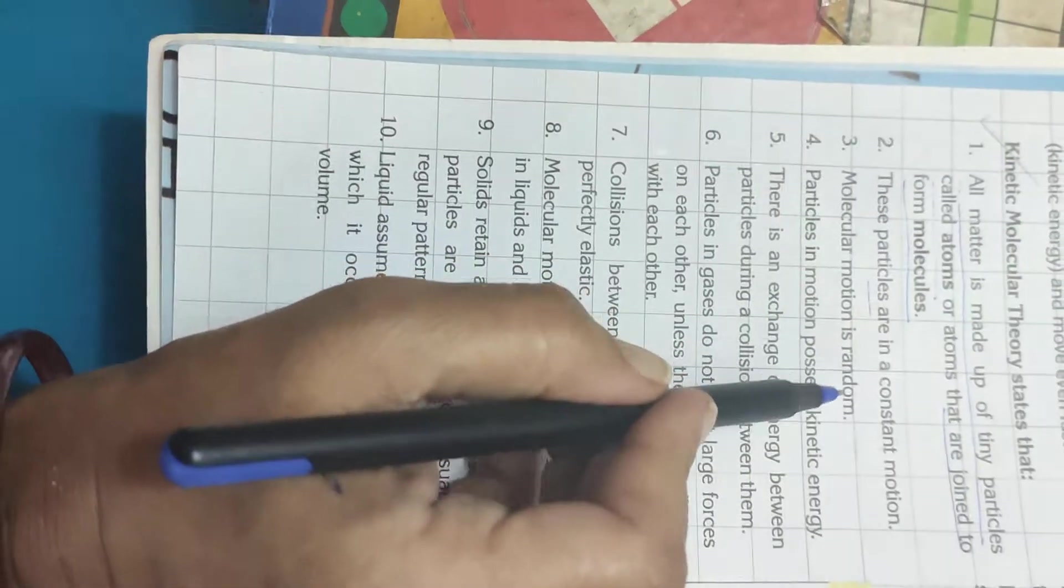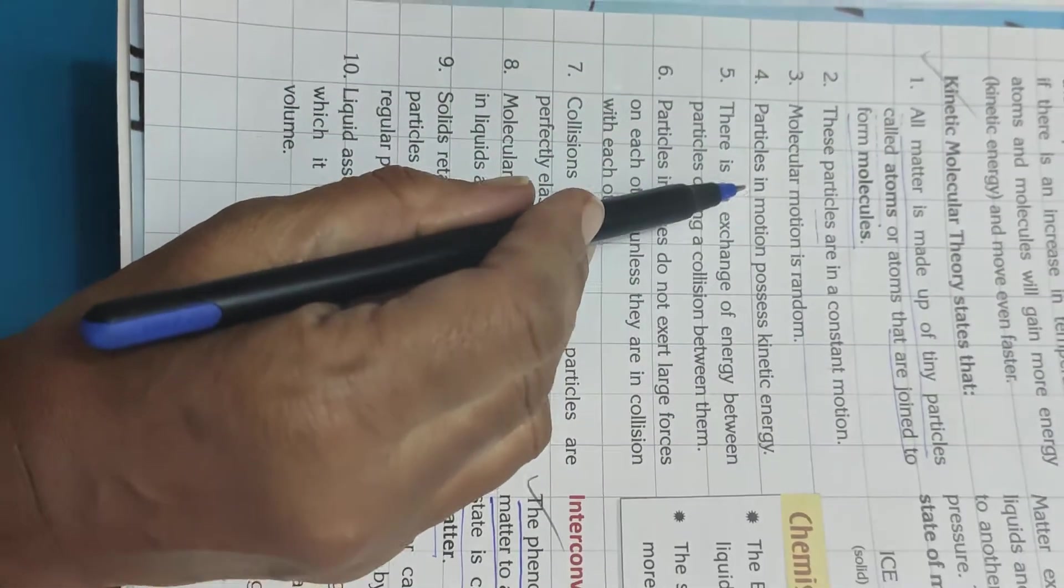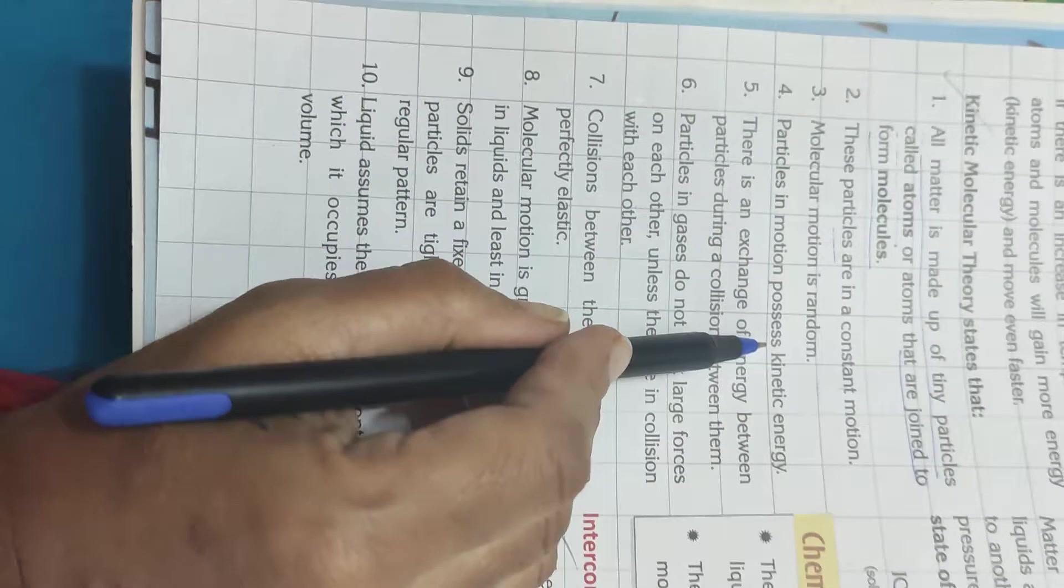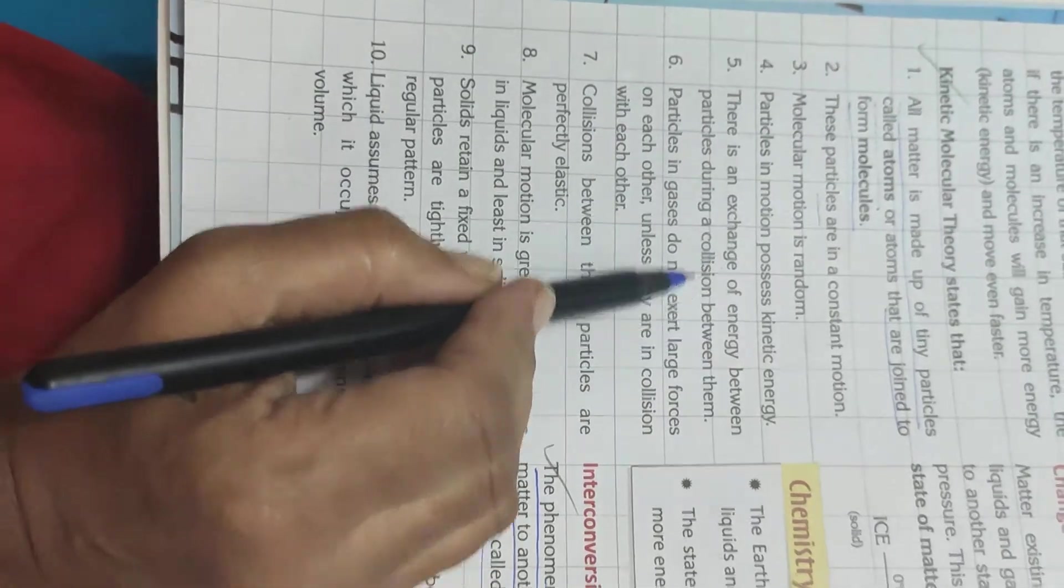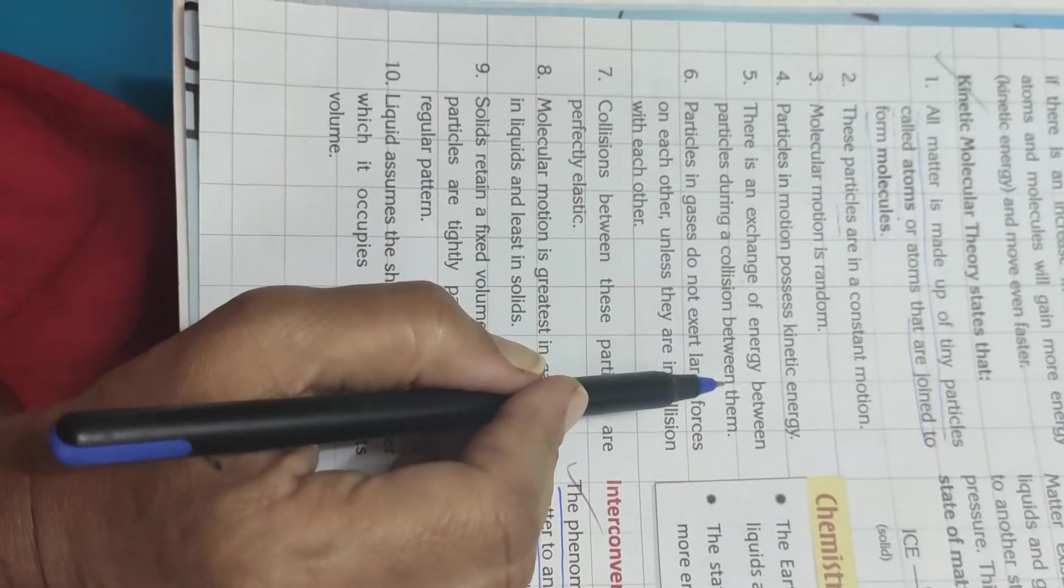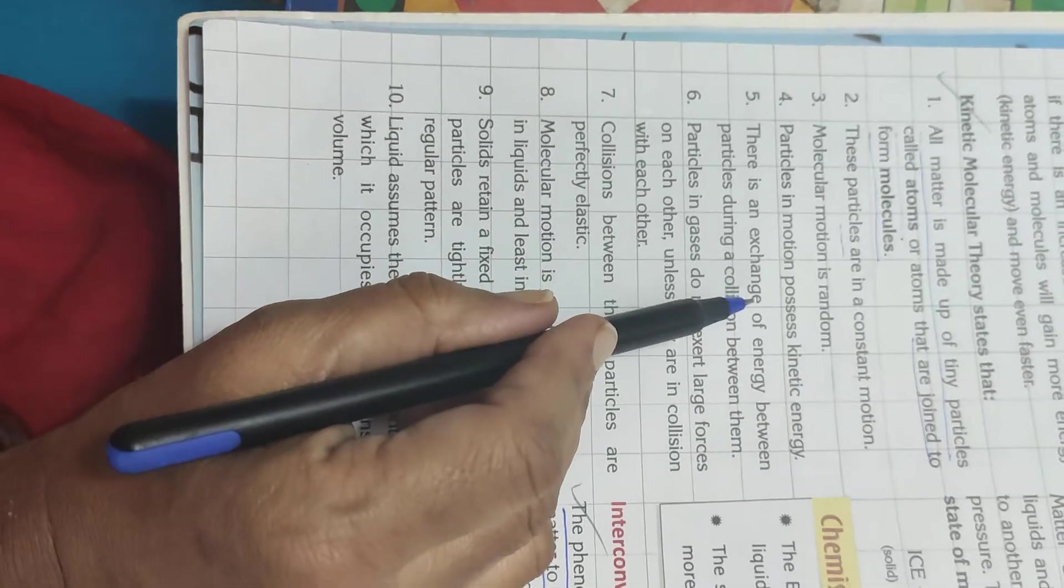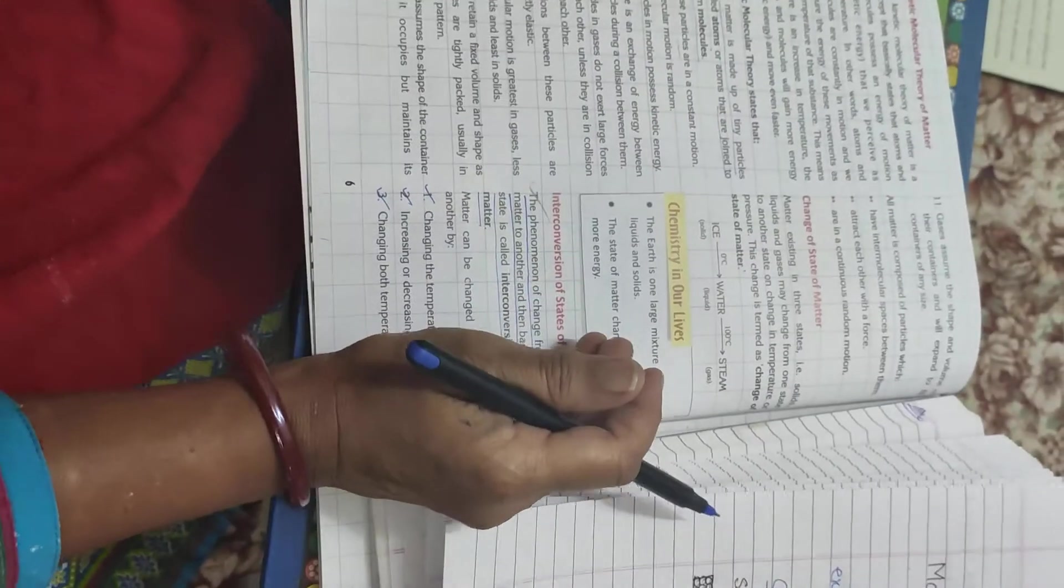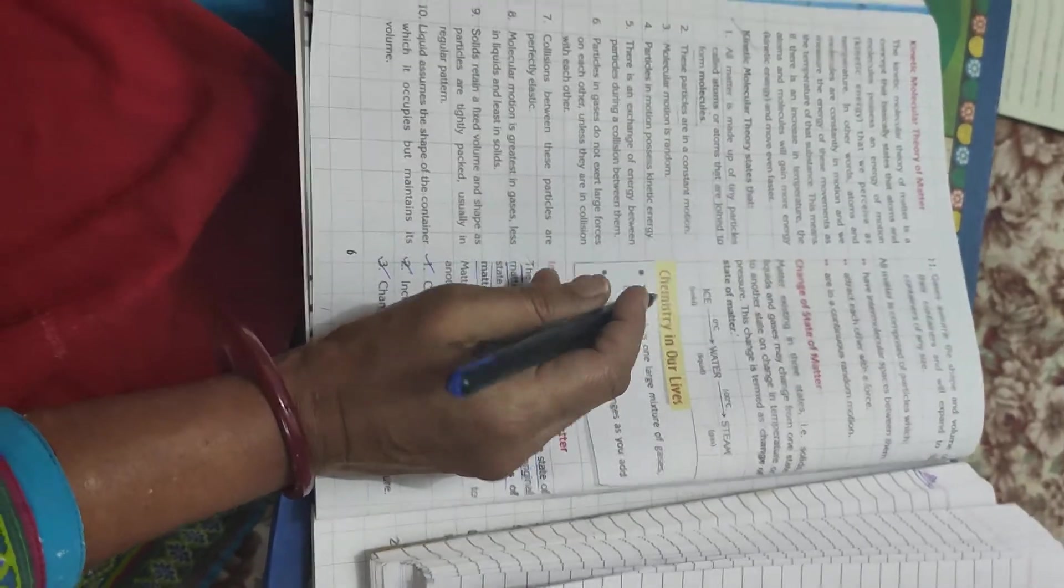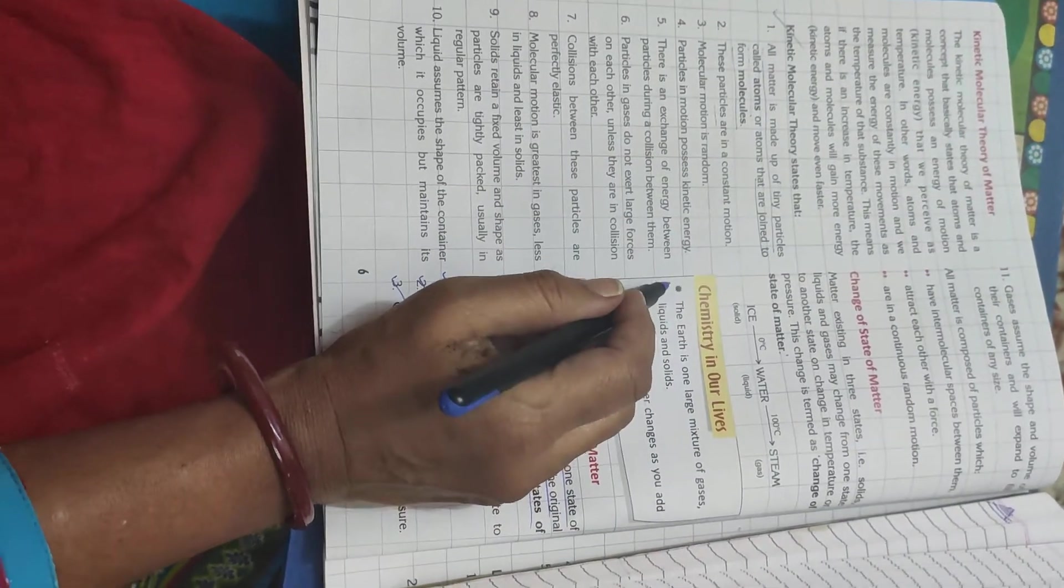Point 4. Particles in motion possess kinetic energy. There is an exchange of energy between particles during a collision between them. What does it mean? Exchange of energy means, we will study little later, that there is a conversion of matter into different forms. When either they get temperature or pressure, whether increase or decrease of temperature or pressure. That we will study little later.